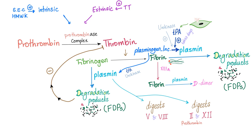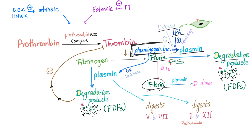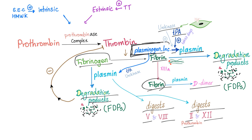Now let's destroy the clot and restore normal blood flow. We need plasmin, but plasmin is present in an inactive precursor form called plasminogen. We need urokinase and TPA to activate plasminogen into plasmin. Plasmin will degrade fibrin into fibrin degradation products, degrade stabilized fibrin into D-dimer, degrade fibrinogen into fibrinogen degradation products, and also digest factors 5 and 8 as well as prothrombin and factor 12.